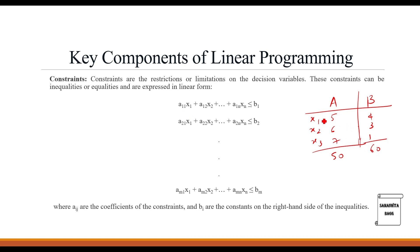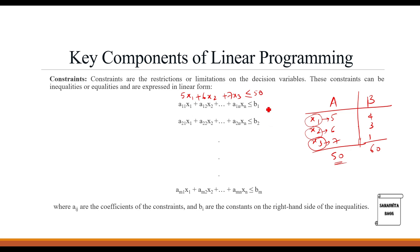When talking about these decision variables, product A is made up of components X1, X2, X3 in the proportion 5, 6, 7 — so the constraint is written as 5X1 + 6X2 + 7X3 ≤ 50. The maximum means that's the most you can have, so we use the less-than-or-equal-to sign. Similarly for the second constraint: 4X1 + 3X2 + X3 ≤ 60. You may have additional constraints depending on the problem.